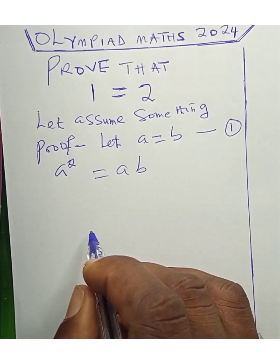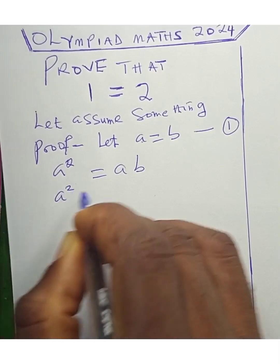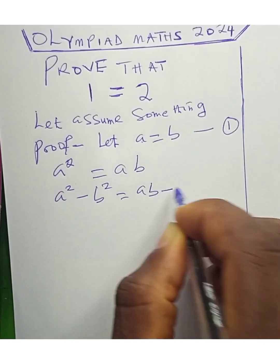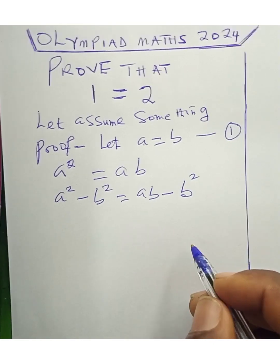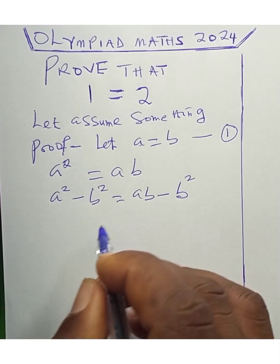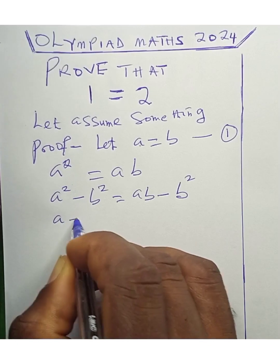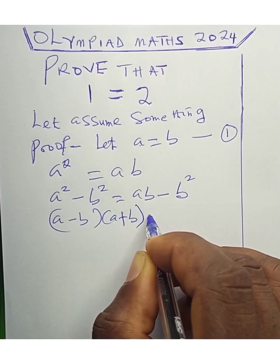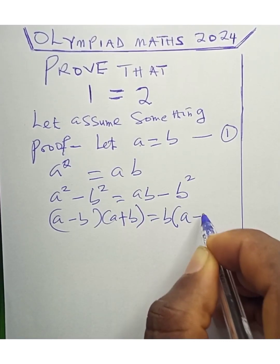Now subtract both sides by b squared: we get a squared minus b squared equals ab minus b squared. The left side is a difference of two squares, which factors as (a minus b)(a plus b). The right side factors as b times (a minus b).